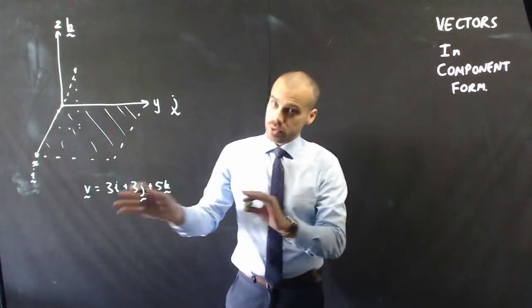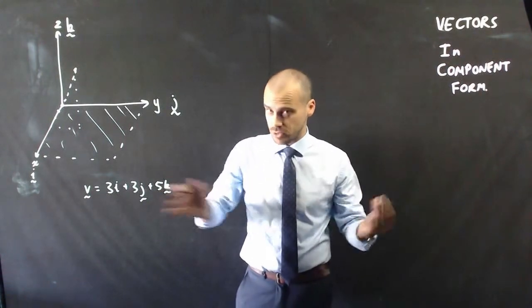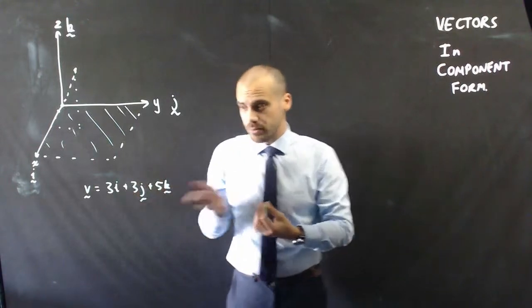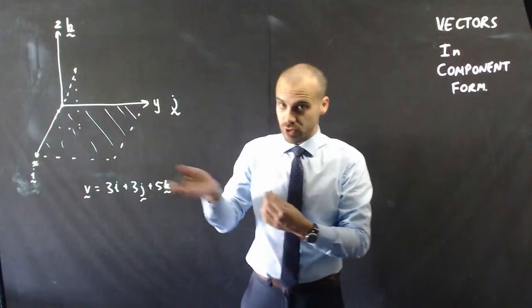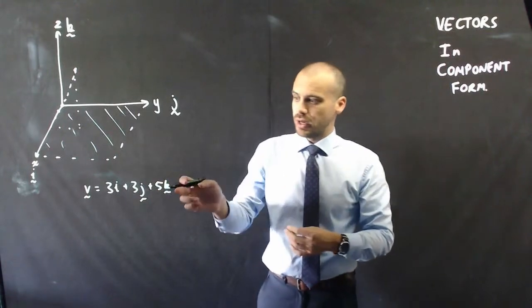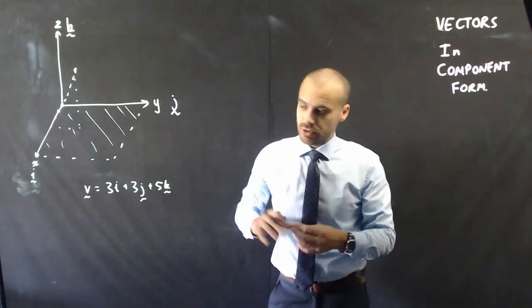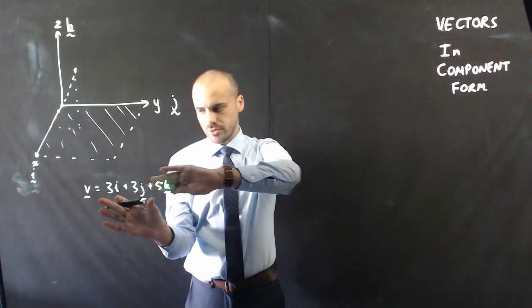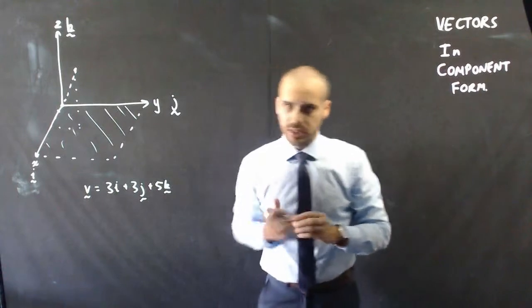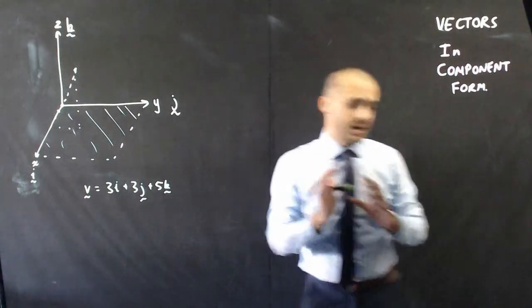Now, once we start moving past here, this is sort of past high school maths, but you can start moving into theoretical dimensions, we can start having further and further dimensions as well, outside of those 3 dimensions. But for now, 2 dimensions, i and j components, 3 dimensions, i, j, and k components. Done.